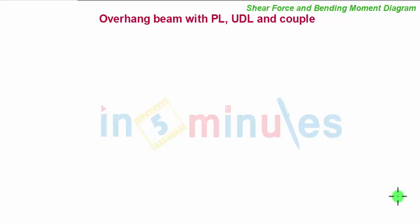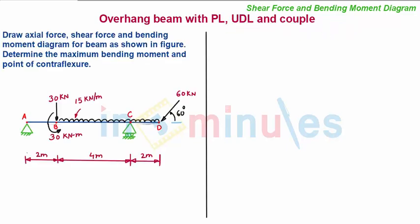Welcome to 'In 5 Minutes.' We take a problem on an overhang beam with a point load, uniformly distributed load, and a couple. Our problem statement is: draw the axial force, shear force, and bending moment diagram for the beam as shown in the figure.